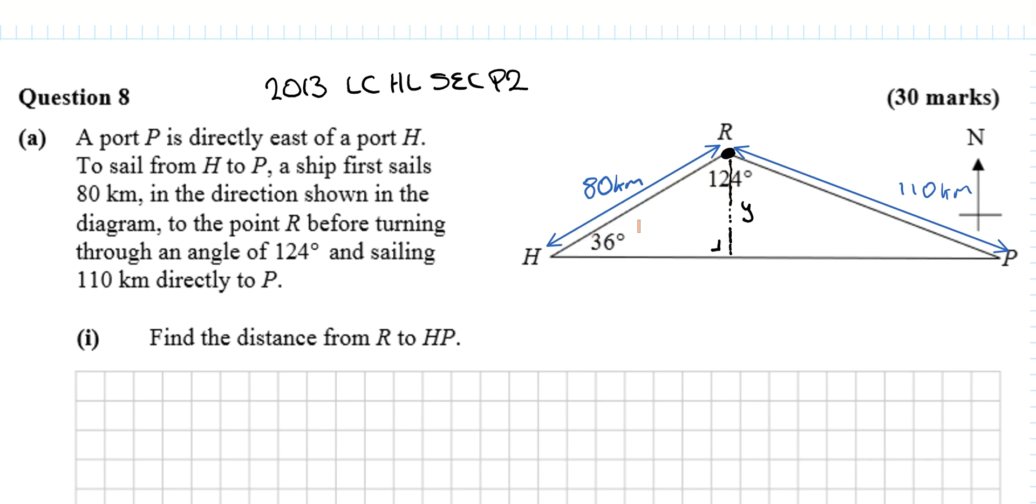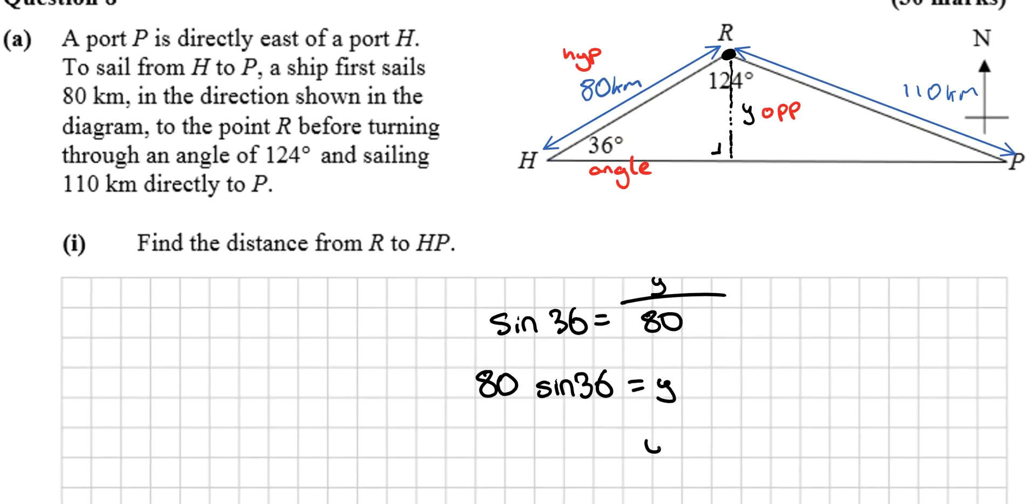We have the hypotenuse and the angle, so we'll use sine. Sine 36 equals opposite (y) over hypotenuse (80). So y = 80 sine 36, which gives us 47 kilometers.